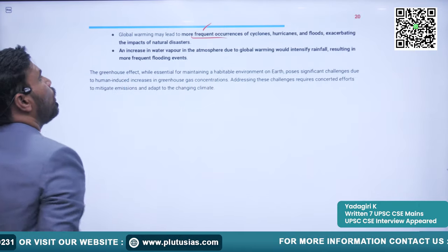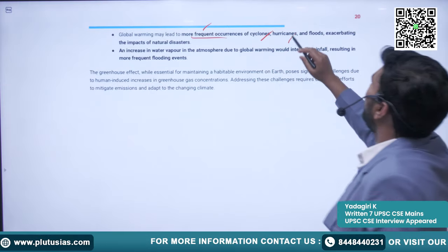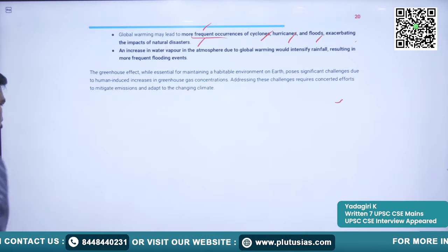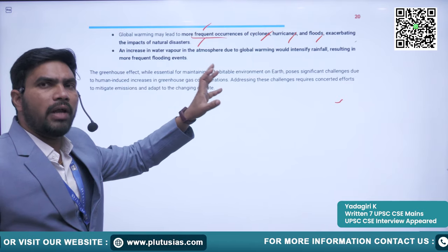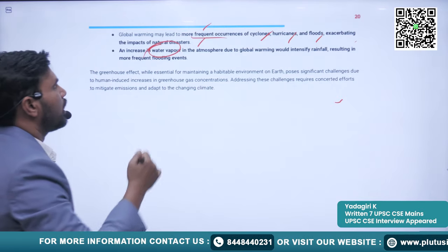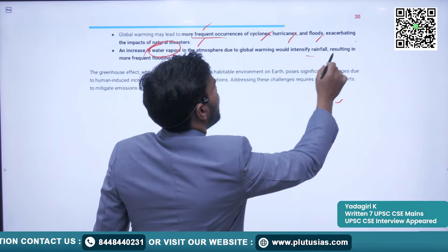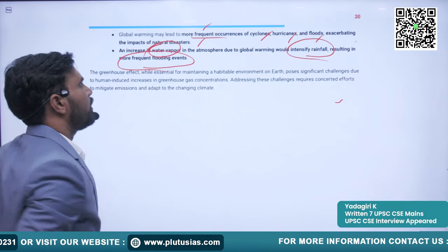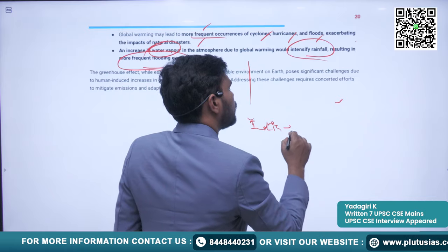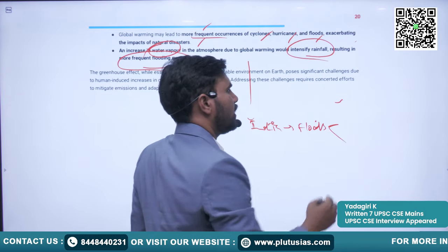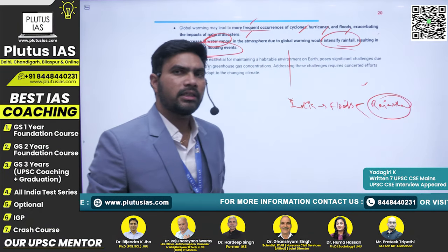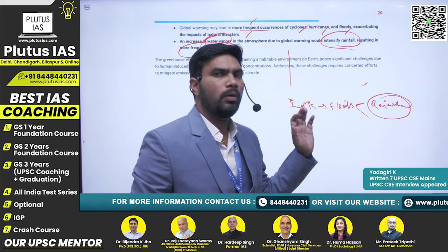Global warming may also lead to more frequent occurrences of cyclones, hurricanes, and floods, exacerbating the impacts of natural disasters. Increasing water vapor in the atmosphere due to global warming will intensify rainfall, resulting in more frequent flood events. Even dry regions like Rajasthan in India are now witnessing floods, which can be attributed to global warming.